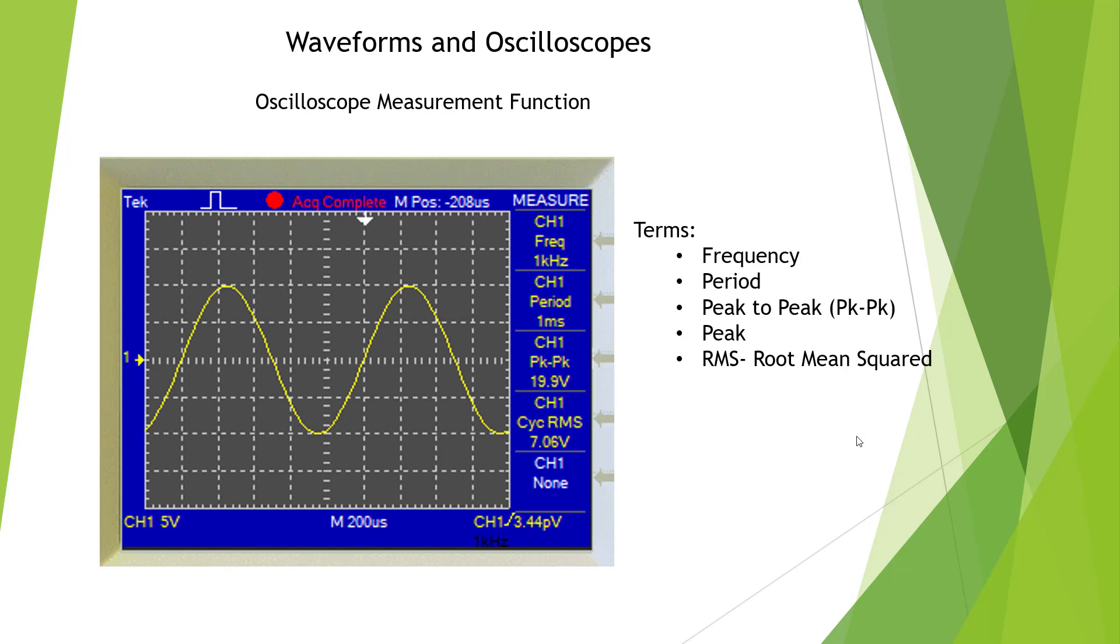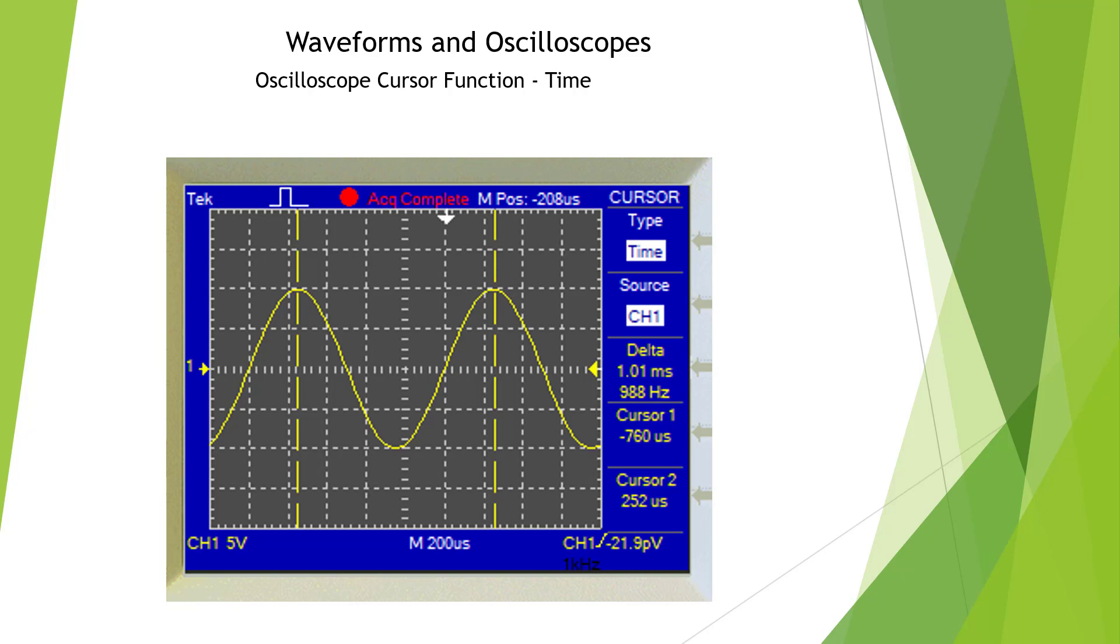Here we have the measurement function, and we could set it and select whatever we want from a fairly significant list of different devices. We could go ahead and set frequency, and it'll tell us how many pulses we have per second. We could check the period. We can measure peak to peak, and we could do RMS, which is an arithmetic measurement of the area under the curve, and for measuring mainly AC-type waves.